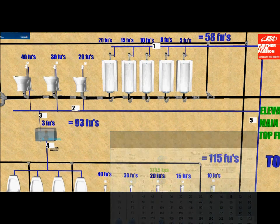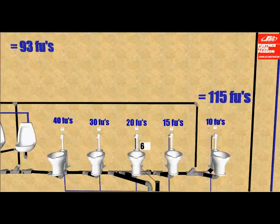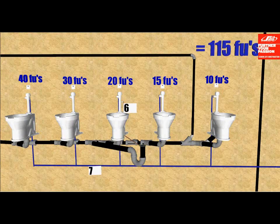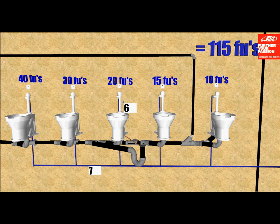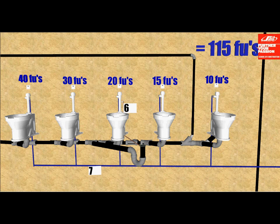Number six is a trap seal primer feeding the floor drain from the toilet flushometer. You can only find this answer from your module and the size of it is three-eighths of an inch.